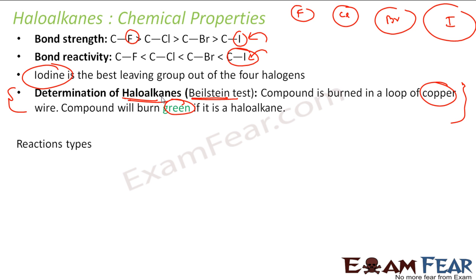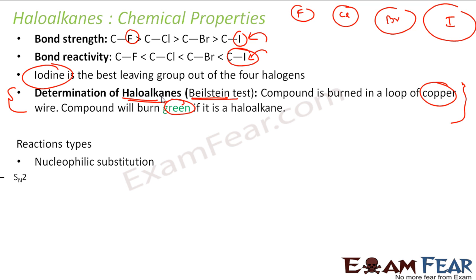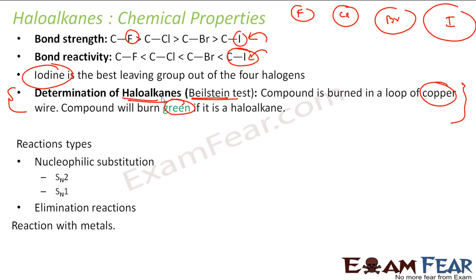Now let's talk about the reaction types of Haloalkanes. We have nucleophilic substitution reactions — two types: SN2 and SN1. We also have elimination reactions, and reactions with metals.